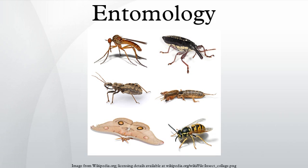Entomology developed rapidly in the 19th and 20th centuries, and was studied by large numbers of people, including such notable figures as Charles Darwin, Jean-Henri Fabre, Vladimir Nabokov, Carl von Frisch, and two-time Pulitzer Prize winner E. O. Wilson.